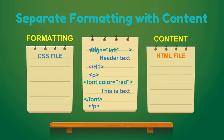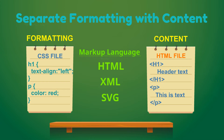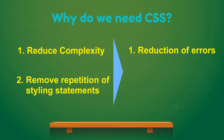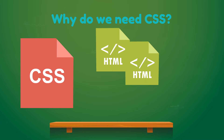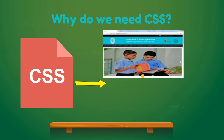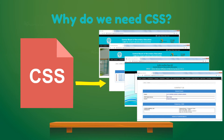CSS helps to separate formatting from content. A markup language like HTML, XML, or SVG can focus on content while CSS helps in the presentation part. It helps to reduce complexity and repetition of styling statements in HTML, which helps in reduction of errors and ease of maintenance. The same CSS file can be shared across multiple HTML documents, making any styling change across multiple HTML files a lot simpler.